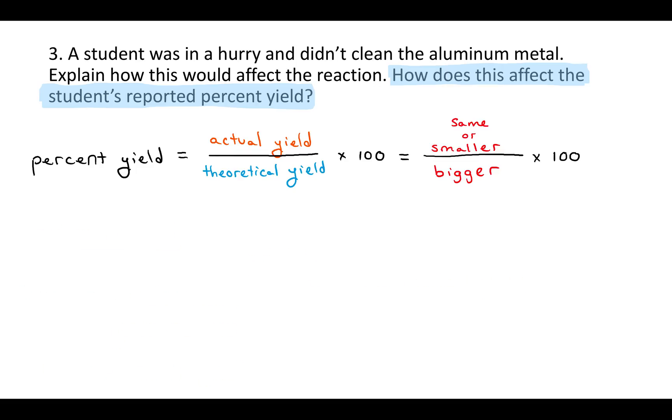Okay, so now we have an equation. The percent yield is going to be the same or smaller on top, bigger on the bottom, and then times 100. So what will that give you overall? Will that fraction be bigger, smaller, or the same as it would be if you didn't have contaminants? If you have a bigger denominator and the same or smaller numerator, I'll let you consider that.